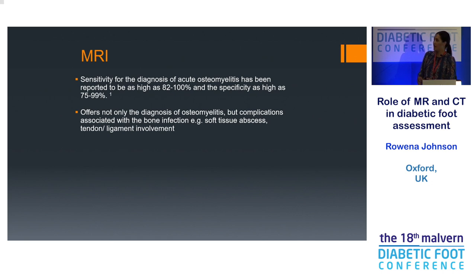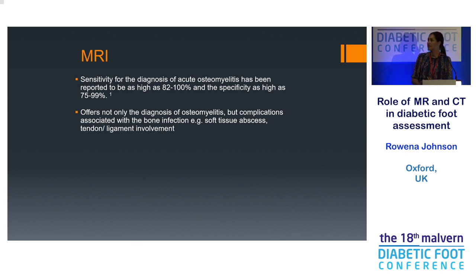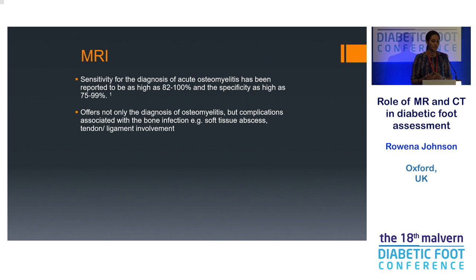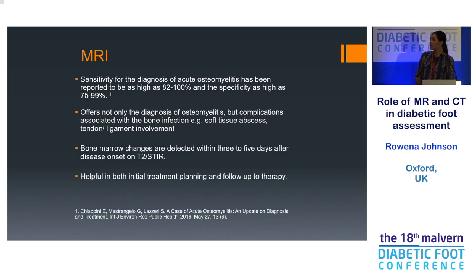MRI is the real workhorse for imaging infection and Charcot. The sensitivity for diagnosis of osteomyelitis has been reported as high as 82 to 100 percent, with specificity between 75 and 99 percent. I have an extremely low threshold for requesting MRI in these patients. It doesn't just give you the diagnosis of osteomyelitis — it lets you look at complications in the soft tissues: is it just osteomyelitis, is there a septic arthritis, is there an associated tenosynovitis?